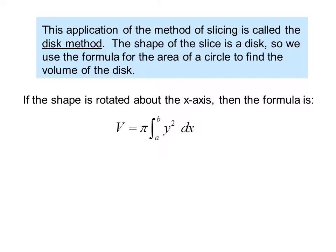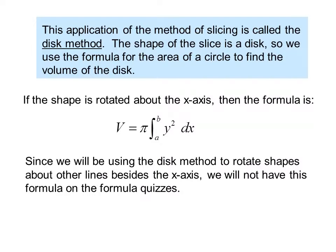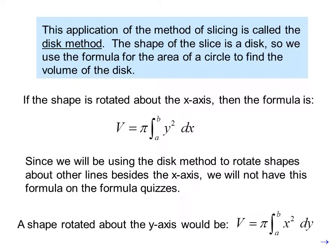If the shape is rotated about the x axis, then the formula is v equals pi times the integral of a to b y squared dx. Since we will be using the disk method to rotate shapes about other lines besides the x axis, we will not have this formula on the formula quizzes. A shape rotated about the y axis would be v equals pi times the integral from a to b of x squared dy.